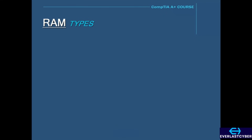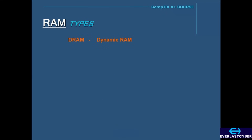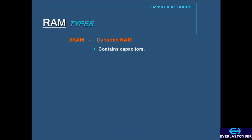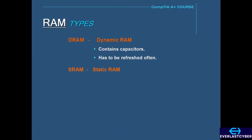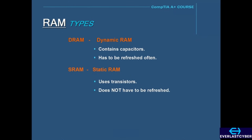RAM also comes in different types, such as Dynamic RAM or DRAM. DRAM is memory that contains capacitors, and because it has capacitors, it has to be refreshed often. SRAM stands for Static RAM. This memory uses transistors and does not have to be refreshed, unlike DRAM.